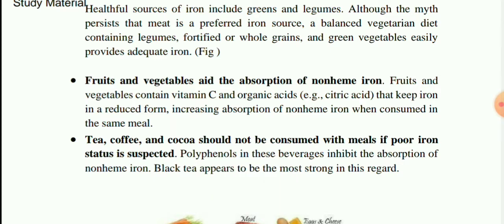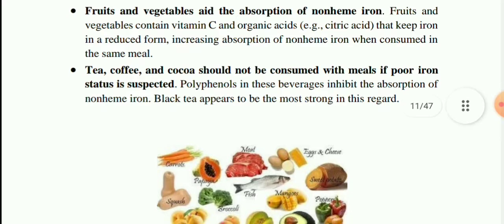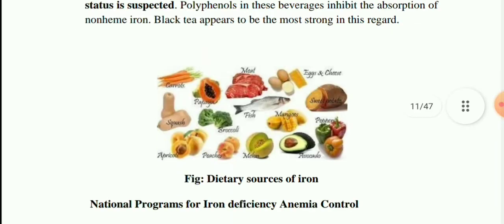Tea, coffee, and cocoa should not be consumed with meals if poor iron status is suspected. Polyphenols in these beverages inhibit the absorption of non-heme iron — black tea appears to be the strongest in this regard.